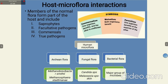Normal microflora interact with the host, and their relationship can be of different types. Based on their nature, they could be saprophytes — which live on dead, decaying matter; facultative pathogens — which become pathogenic only under certain conditions; commensals — where one is benefited but the host is not harmed; or true pathogens — which will affect us. Commensalism means one is benefited and the other is unaffected; mutualism means both are benefited; parasitism means one is benefited and the other is at a loss.